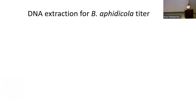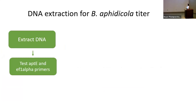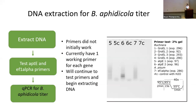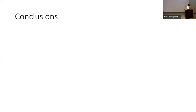For the B. aphidicola titer, we are working with DNA. We need both DNA and RNA because we are comparing GroEL concentrations and B. aphidicola titer — simply increasing the titer might proportionally increase GroEL, so we need to compare both. The process is similar: extract DNA, test primers, and run qPCR. The primers we are using are atpE and EF1-alpha, housekeeping genes in the aphid. We initially had little success, but currently have one primer working per gene and will continue testing while beginning DNA extraction from our aphids.